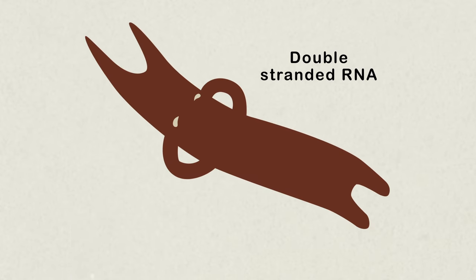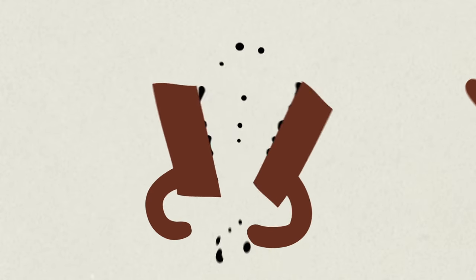So you have double-stranded RNA, you dice it up, it targets mRNA, and then that gets sliced up too. Voila! You've prevented expression and saved yourself some unhappy diners.